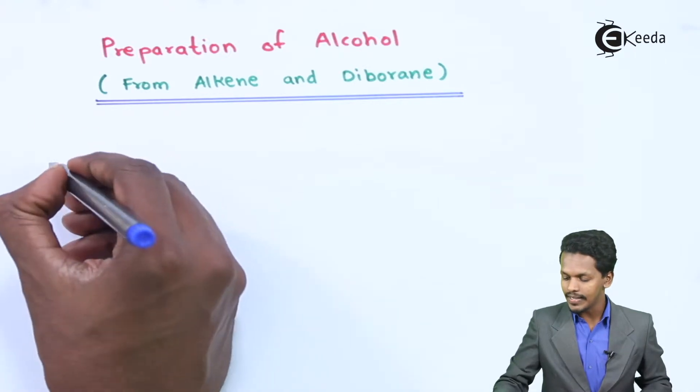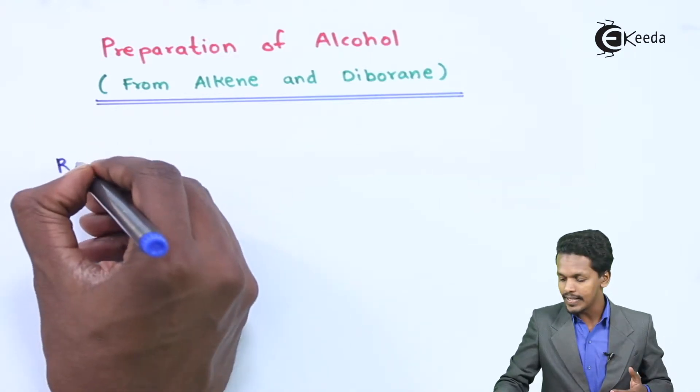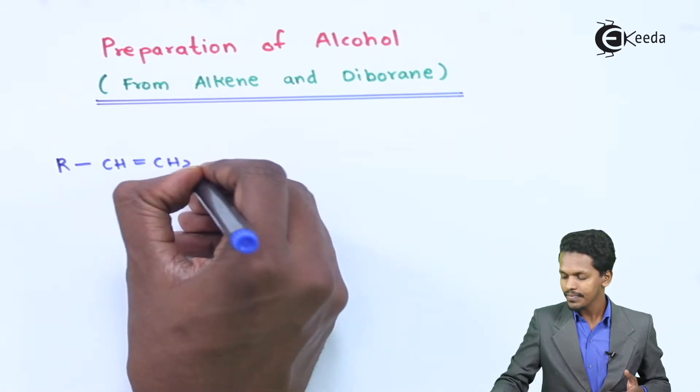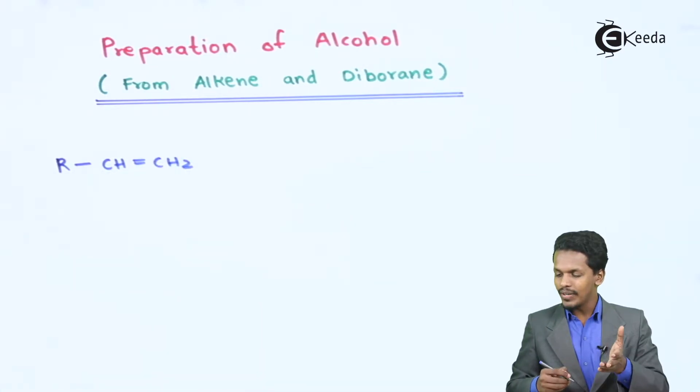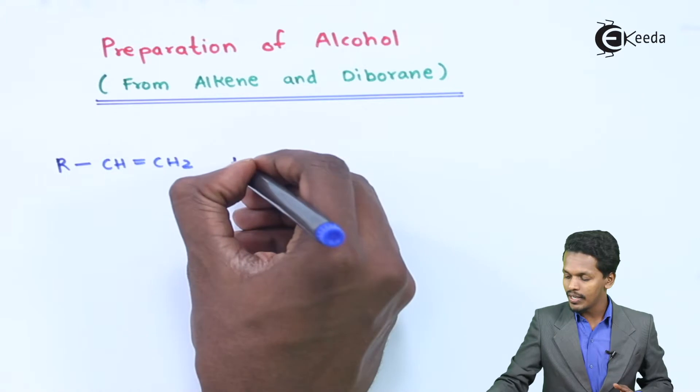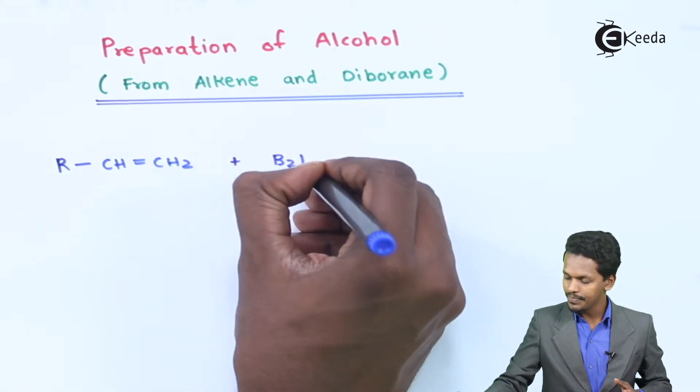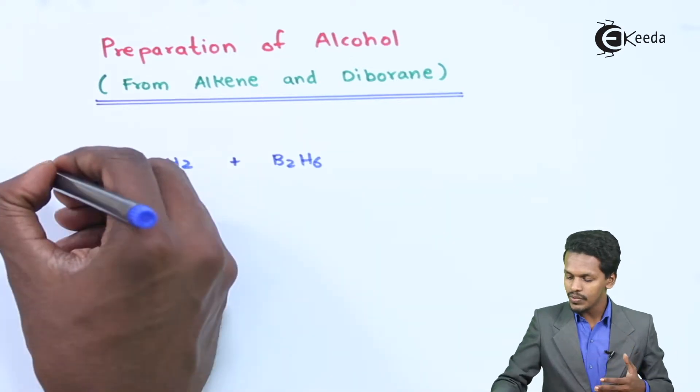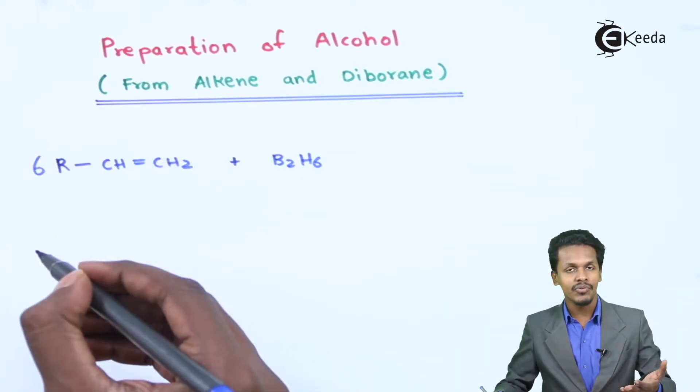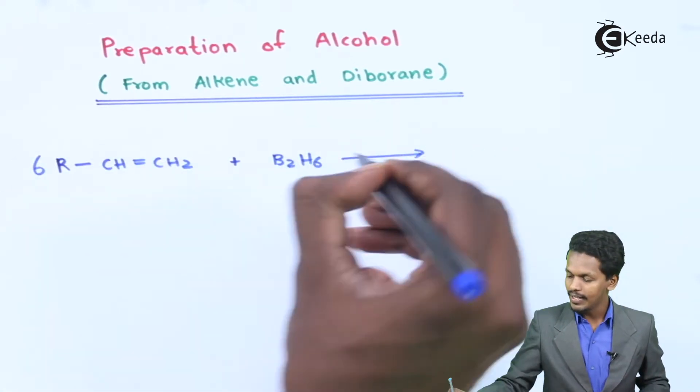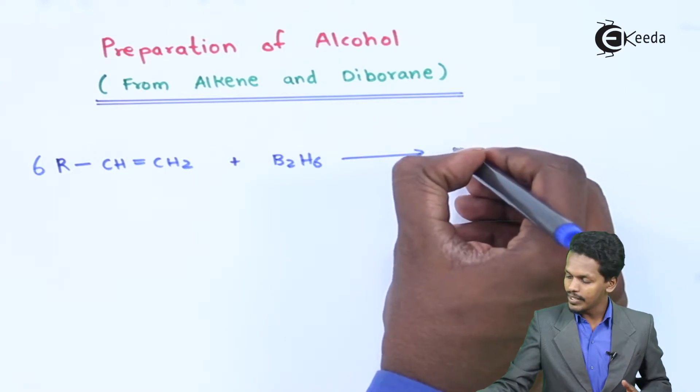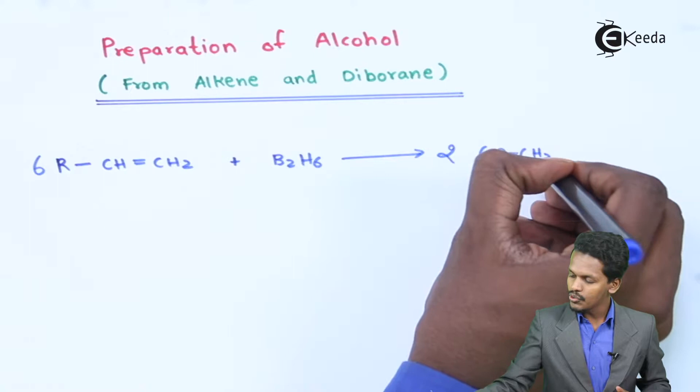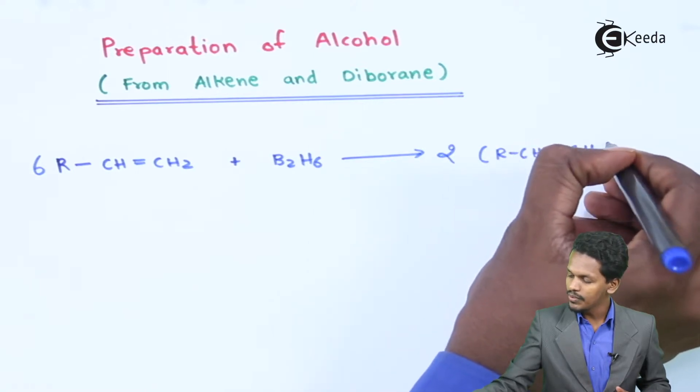So for example if I am considering an unsaturated alkene that is R-CH=CH2, and obviously I have to react it with Diborane, so Diborane is nothing but B2H6. So the stoichiometry turns into such a way that we have to use 6 moles of the unsaturated alkene, so that we could get 2 moles of R-CH2-CH2)3B.